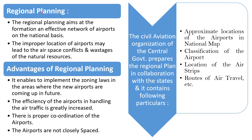The civil aviation organization of the central government passes the regional plan in collaboration with the states. It contains the following particulars: approximate location of the airports on the national map, classification of the airport, location of airstrips, and routes of air travel.